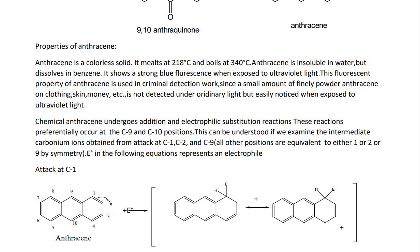Properties of anthracene: it is a colorless solid, melting at 216°C and boiling at 340°C. Anthracene is insoluble in water but dissolves in benzene. It shows strong blue fluorescence when exposed to ultraviolet light. This fluorescent property of anthracene is used in criminal detection work, since a small amount of finely powdered anthracene on clothing or skin is not detected under ordinary light but is easily noticed when exposed to ultraviolet light.